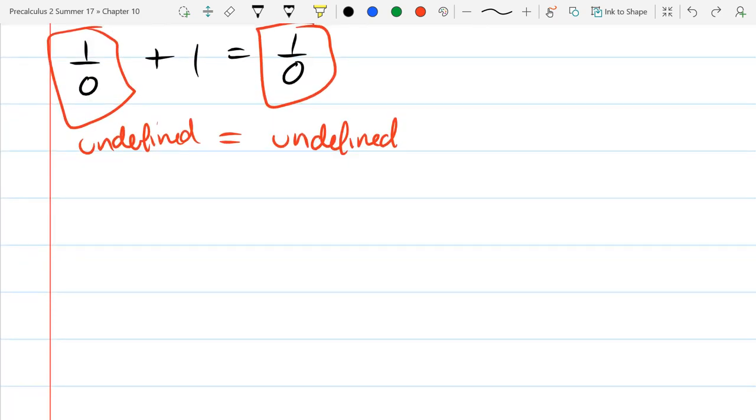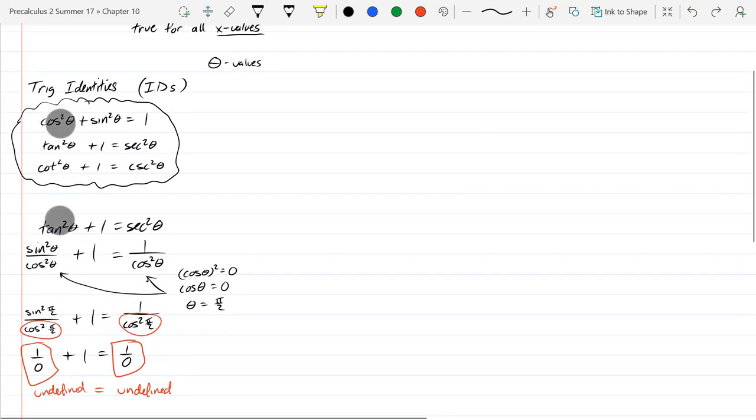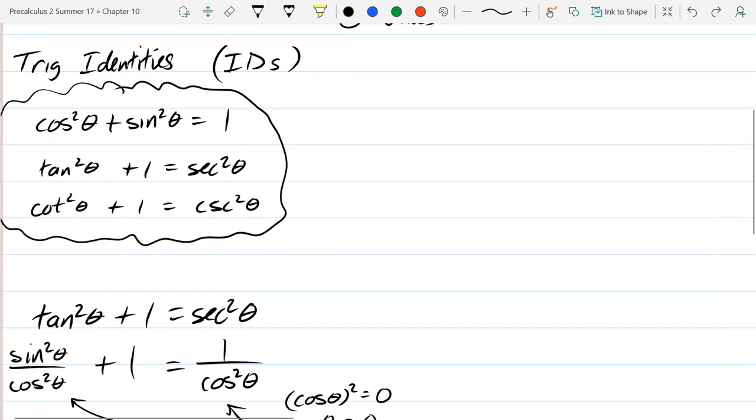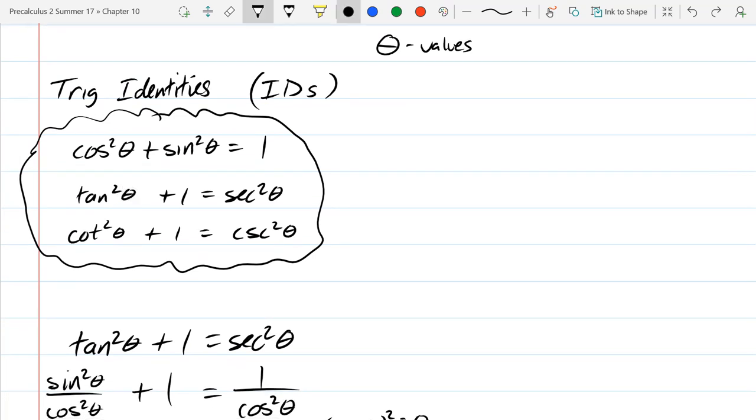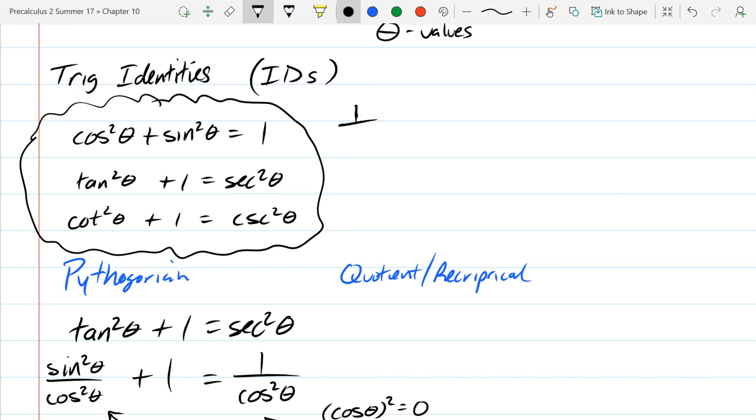Those are how identities work. Let's write down, we wrote down some review of these called Pythagorean. Let's write down the rest. I'll label all these Pythagorean. Next group we have, let's go with the quotient. Let's try to be consistent, I'll write that down here. I'm going to mix quotients and reciprocals together. We'll go with cosine first, one over cosine.